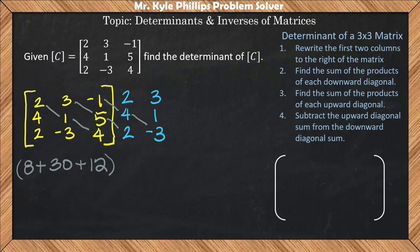Then it says find the sum of the products of each upward diagonal. So I started at the top left, so now I'll start in the bottom left, and I'll say 2 times 1 times negative 1. This is negative 2.